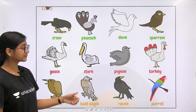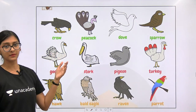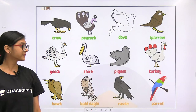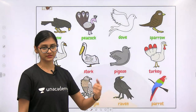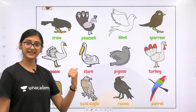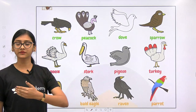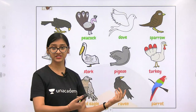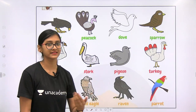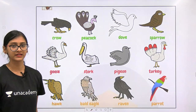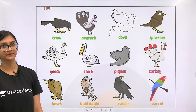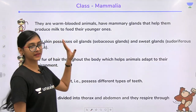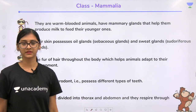Examples of birds include sparrow, peacock, crow, dove, pigeon, turkey, parrot, raven, eagle, hawk, and goose. There are many more colorful birds depending on climate and region. Some birds are used commercially for egg and meat production. Pigeons were historically used by our ancestors to send messages, but that practice has been replaced by smartphones.